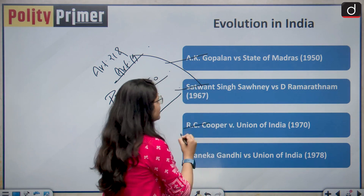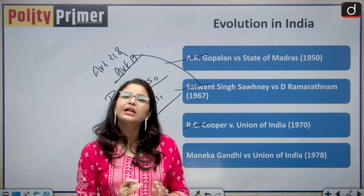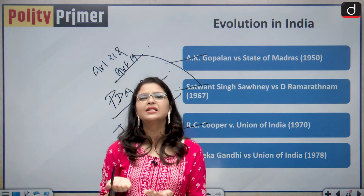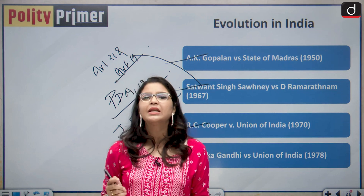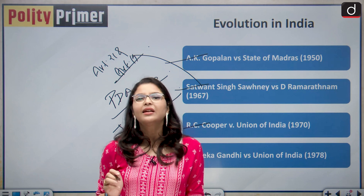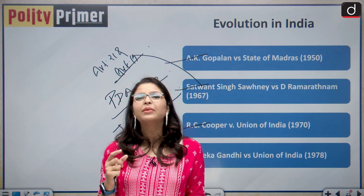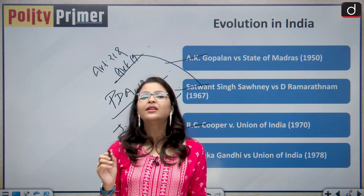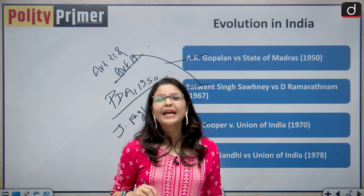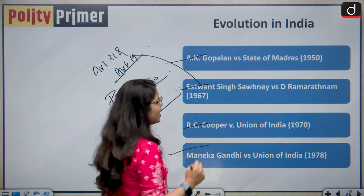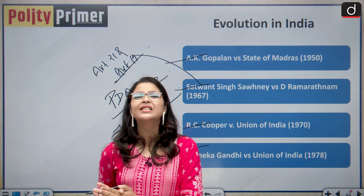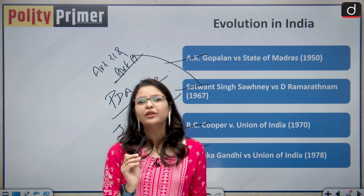Then came the case of R.C. Cooper versus Union of India, where the Supreme Court similarly held that the procedure established by law must be reasonable, establishing the test of reasonableness of the procedure established by law. Then came the landmark case of Maneka Gandhi versus Union of India, which completely changed the landscape of interpretation of Article 21 in India, giving it a very wide interpretation.